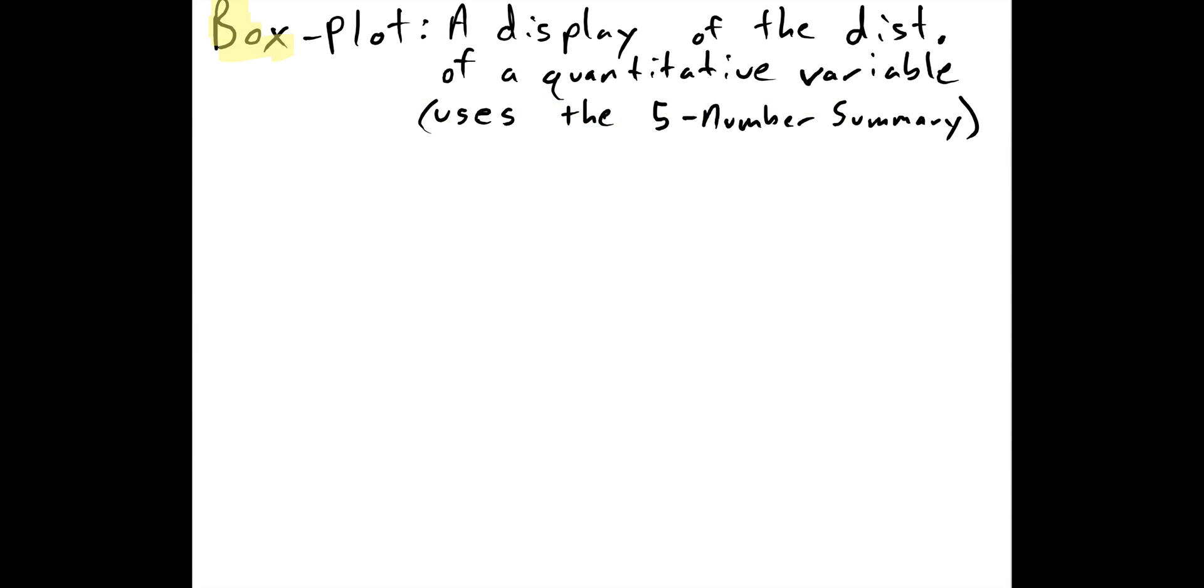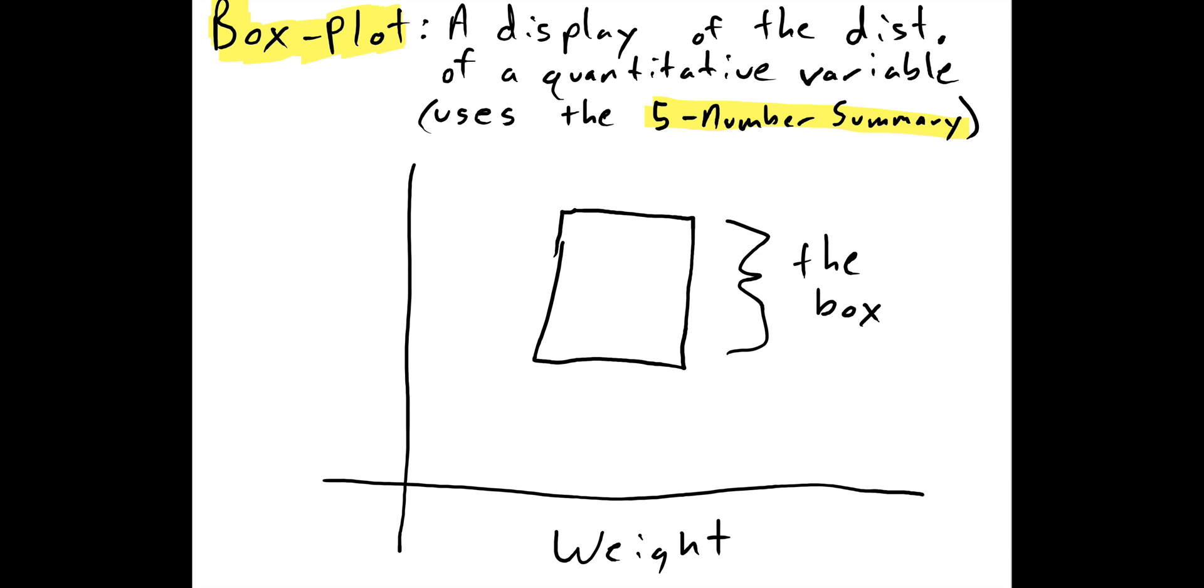We've talked about histograms as ways to display quantitative variables, and here's another way, which is a box plot. This box plot comes from the five-number summary. Here's an example of what one might look like. Say I had a group of individuals, and I'm looking at their weights. The box plot has a big box and these little things that come off it. Some people refer to these as the whiskers. And then inside the box, there's this line. And sometimes below the whiskers, we might have a little dot that looks like this.